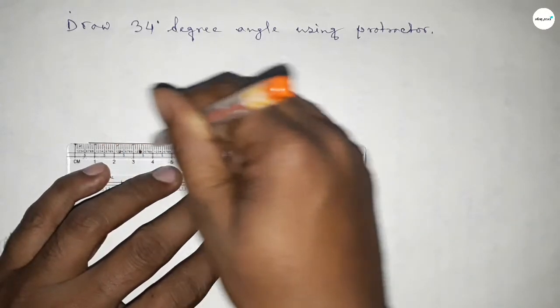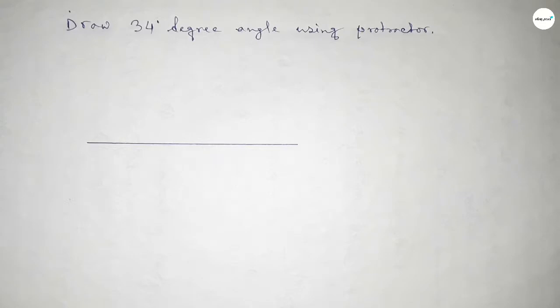First of all, we have to draw a straight line of any length. So first, drawing here a line, next taking here B point and here C point.